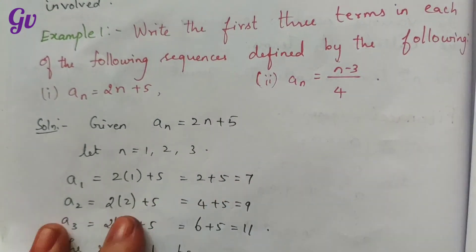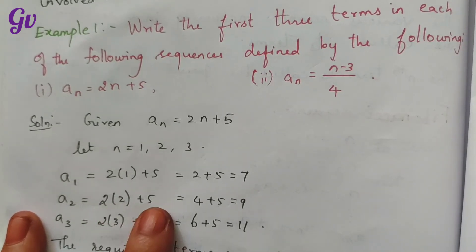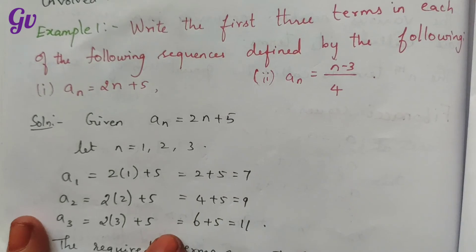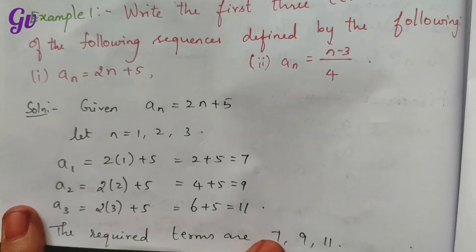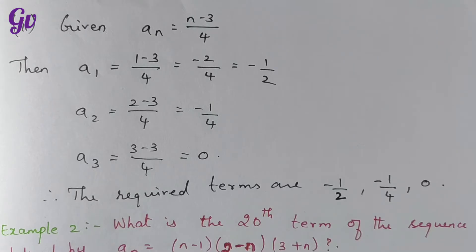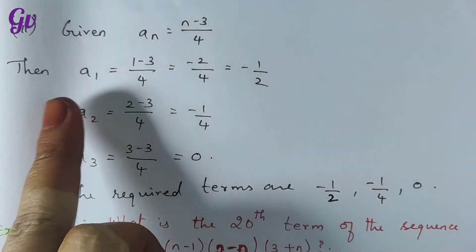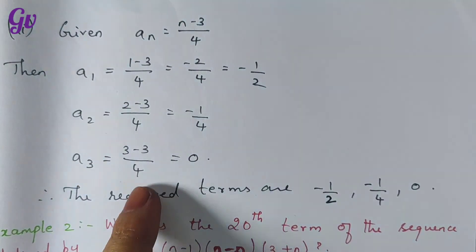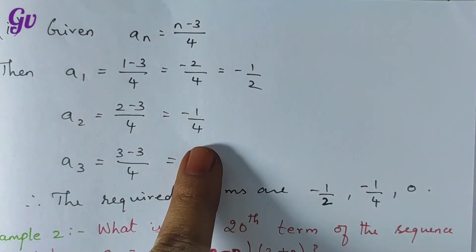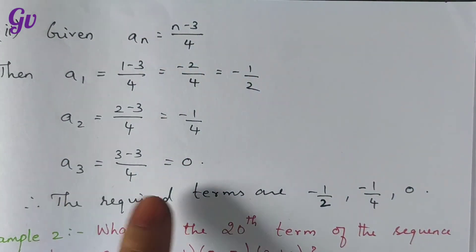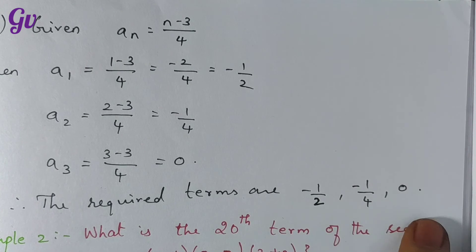So the first three terms are 7, 9, 11. Next, for the second part: an equal to n minus 3 divided by 4. Substituting n equals 1: the first term is minus 1 by 2. Substituting n equals 2: the second term is minus 1 by 4. Substituting n equals 3: the third term is 0. So the required terms are minus 1 by 2, minus 1 by 4, and 0.